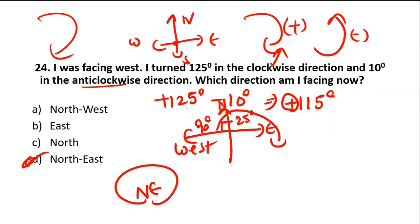Answer for the question is Northeast — Option D. This method is especially useful when you have multiple clockwise and anticlockwise rotations like 90°, 180°, 60°, 160°. Write positive for clockwise and negative for anticlockwise, sum them up, then rotate from the initial direction. West to North is 90 degrees clockwise; the remaining 25 degrees puts you in Northeast. Answer is Option D.